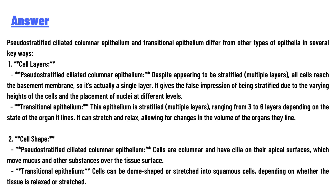Transitional epithelium is stratified, ranging from three to six layers depending on the state of the organ it lines. It can stretch and relax, allowing for changes in the volume of the organ. Second, cell shape: pseudostratified ciliated columnar epithelium cells are columnar and have cilia on their apical surfaces, which move mucus and other substances over the tissue surface. Transitional epithelium cells can be dome-shaped or stretched into squamous cells depending on whether the tissue is relaxed or stretched.